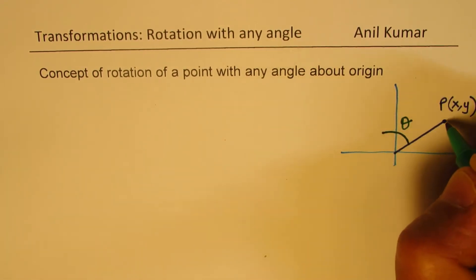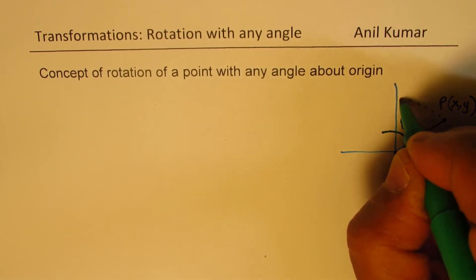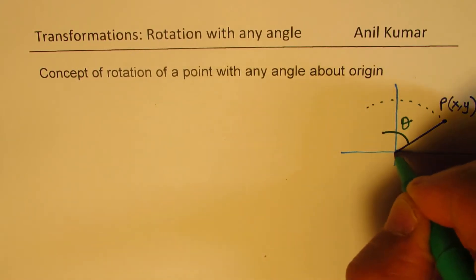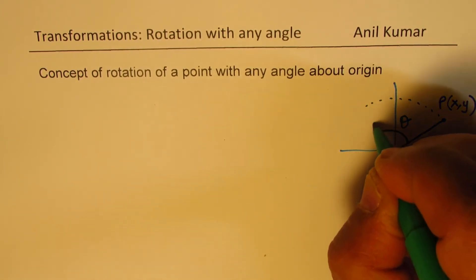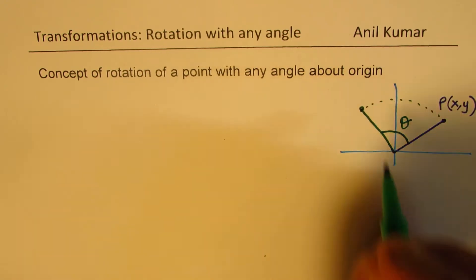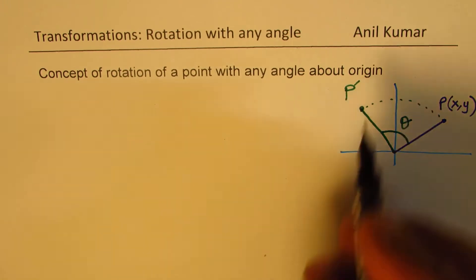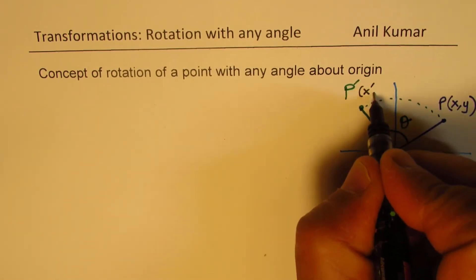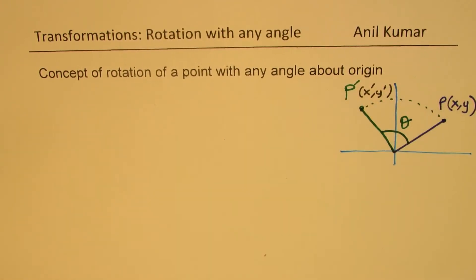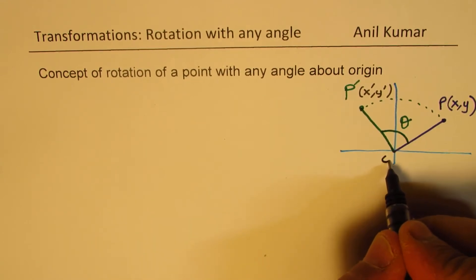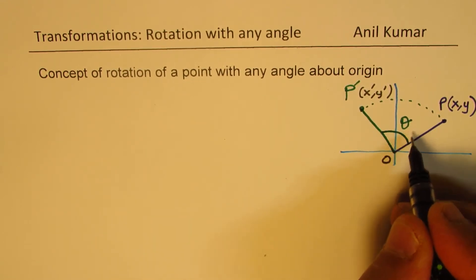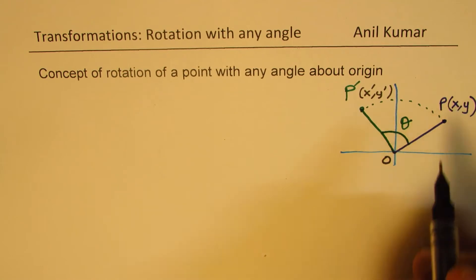So in that case, this point will be positioned somewhere there. So what we get here is a point P dash. Let's call this as the image of this point. So the idea is to find the coordinates of the image. So you can call them as x dash, y dash. We are doing rotation of theta degrees, so theta is a general angle.